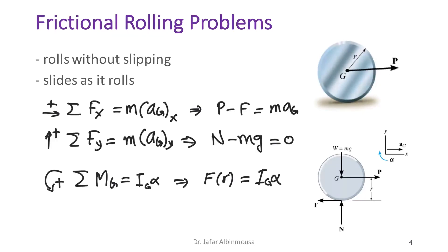In some situations we end up with N, f, a_G, and α as four unknowns. With three equations, we need a fourth relation.